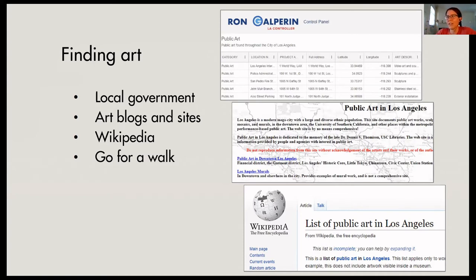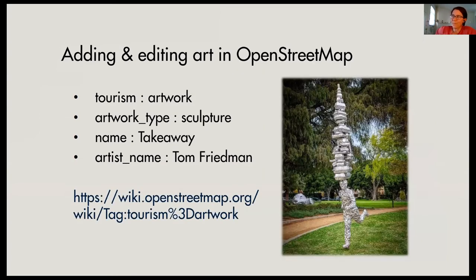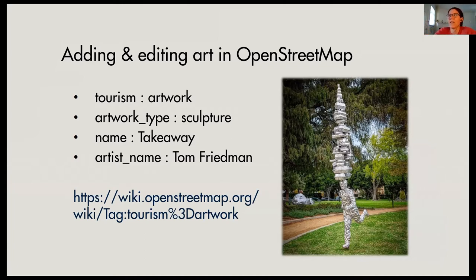There are other people who are just fans - local blogs, sites, things like that. Wikipedia, if you're in a bigger city, usually has lists of public art. And then there's the good old go-for-a-walk in places you don't always go. Once you find these, this is a great thing to do with beginners. It's typically a point, so you don't have to worry about drawing exact polygons or lines. Once you drop the point, there are a few tags: tourism=artwork is the most important, defining this as a piece of art.